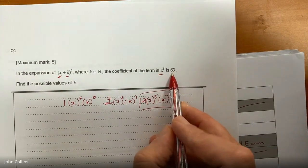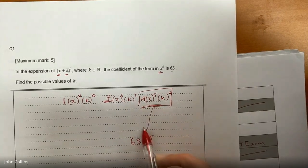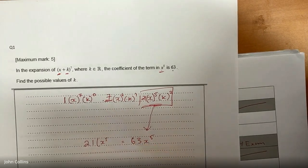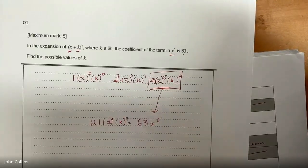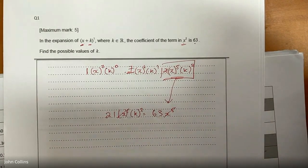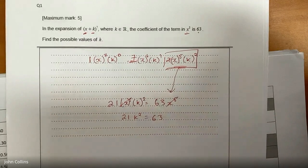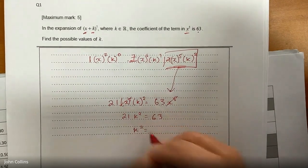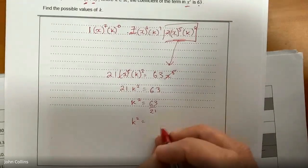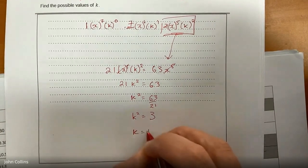So I know that is 21 × k² which gives the coefficient. So the coefficient of that term is the number in front: 21k² is equal to 63. Divide both sides by 21 — that's 63 over 21, which divides three times. So if k² is three, k is going to be plus or minus the square root of three.